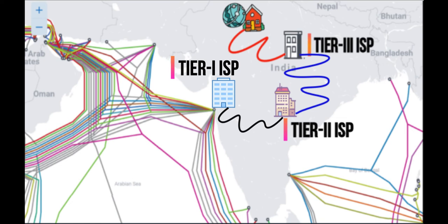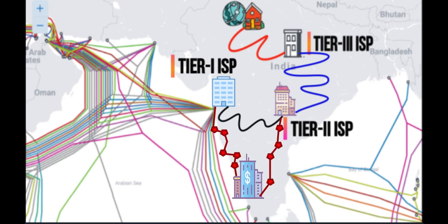However, it is not mandatory to connect through tier 3 ISP to get internet service. In some enterprise offices, tier 1 or tier 2 ISPs have direct connectivity available in those buildings or offices, so you can also take services directly from tier 2 or tier 1 ISPs.